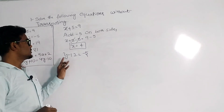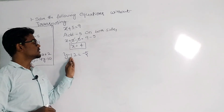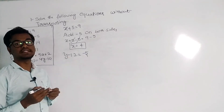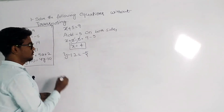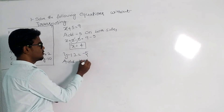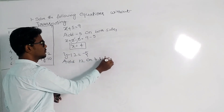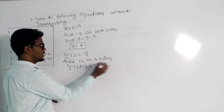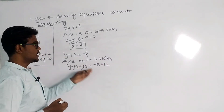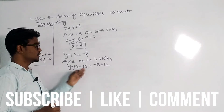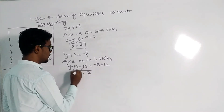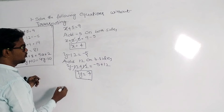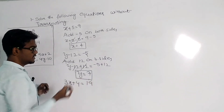The next equation is y minus 12 equals minus 5. Here, minus 12 is the extra term on the left side. To make minus 12 become zero, we need to add plus 12 on both sides. So y minus 12 plus 12 equals minus 5 plus 12. The minus 12 and plus 12 cancel, leaving y equals 7.